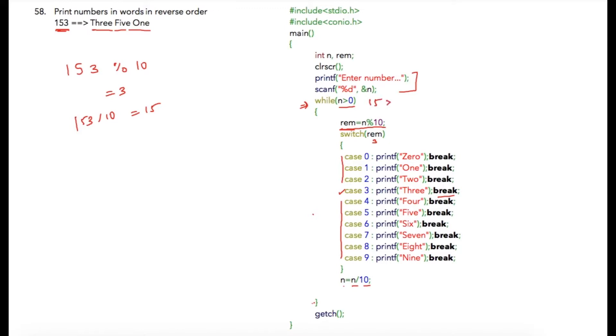So again with this statement, we will find the new remainder. Now it will be 5, and then 5 will be printed on the output screen. Then 15 will be divided by 10, so your n will become 1.